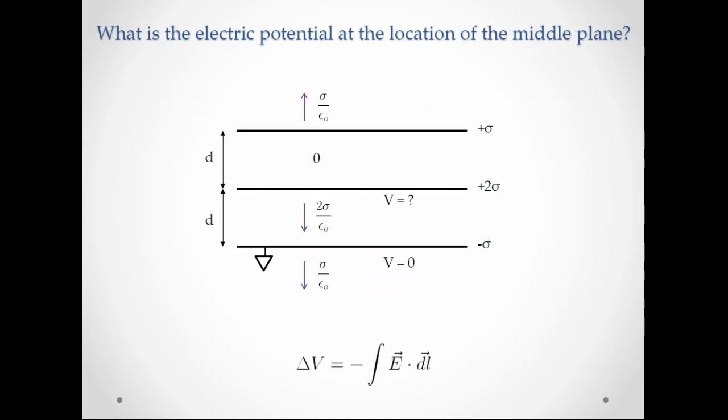So now we want to find out what the potential is at the middle plate. And we notice that we can use the equation, the change in voltage is equal to minus the path integral E dot DL, right?